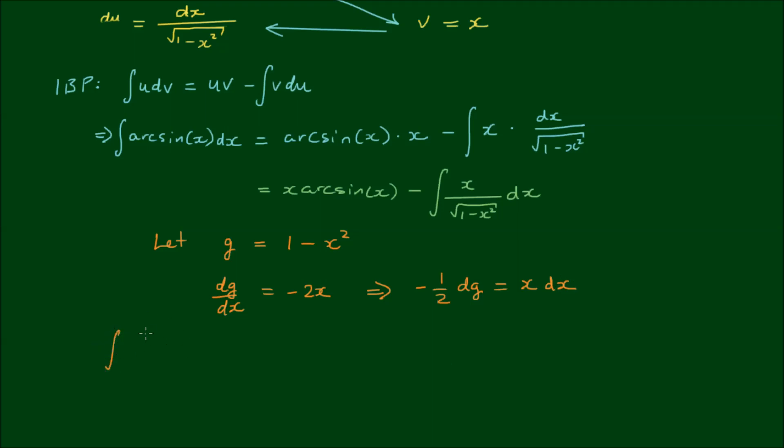So let's just consider the integral of x over the square root of 1 minus x squared dx. And if I make the substitutions, the integral becomes the integral of negative 1 half dg over the square root of g. Take the negative 1 half out of the front, by the integral of g to the power of negative 1 half. And the dg remains. So we simply use the power formula. We've just got a simple power integral here.